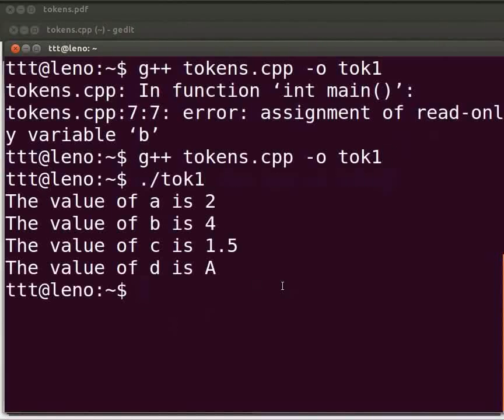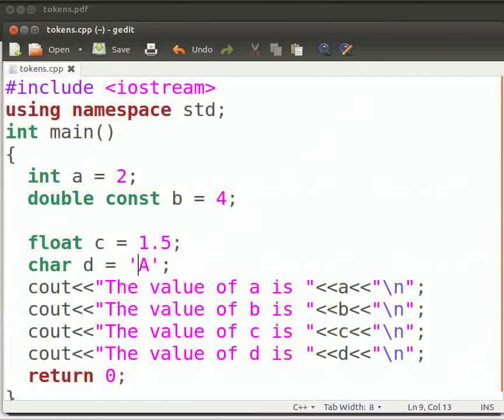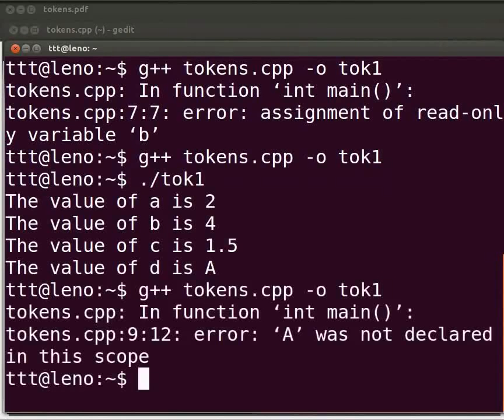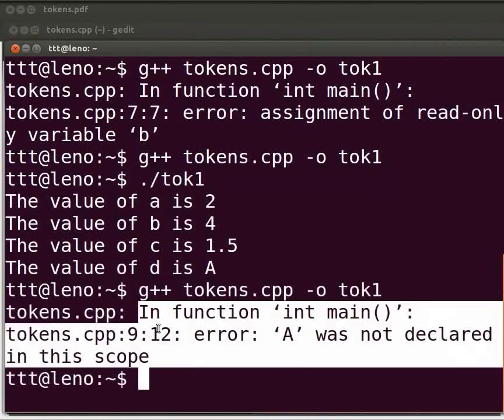Now we will see another common error. Switch back to our program. Suppose here I will miss the single quotes. Click on save. Let us execute. Come back to our terminal. Compile as before. We see an error at line number 9 in our tokens.cpp file.